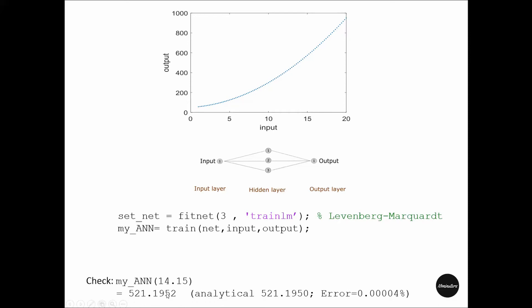In MATLAB, in this function I have put the value 14.15 for input, which is not included in the original points. Running this gives me the y coordinate or output value of 521.19.